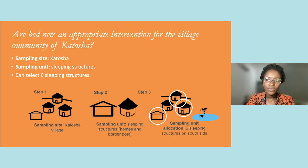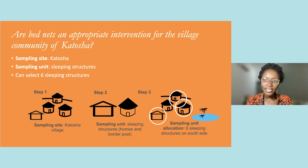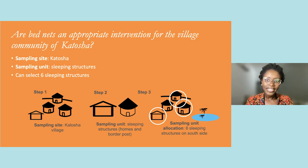Let's decide how we will select which units to sample in Katosha. We determined that sleeping structures are the sampling unit, and we have enough resources to sample six sleeping structures. Six out of 51 is not many, so we need to prioritize where we will focus our sampling. We have the following information: on the south side of the village there is a non-Anopheles larval site, villagers often report mosquito biting, and several household members from that area were recently infected with malaria. The south side reports more malaria cases than the rest of Katosha. Therefore, we decided to prioritize sampling in the south side and select six sleeping structures, including the border post also located in the south side.